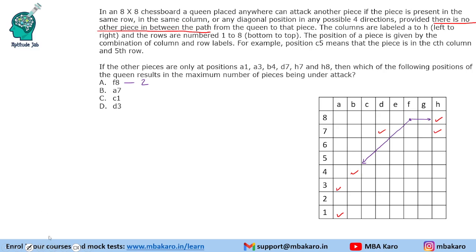Next, we check A7. The queen at A7 has one piece under attack in the column direction and another piece under attack going diagonally — so two pieces under attack. Note: if we had used only the row/column/diagonal difference logic, we would have counted A1, A3, D7, and H7 as four pieces. But since D7 blocks the path to H7, and A3 blocks the path to A1, the actual count is only two. Drawing the matrix is important to visualize blocking.